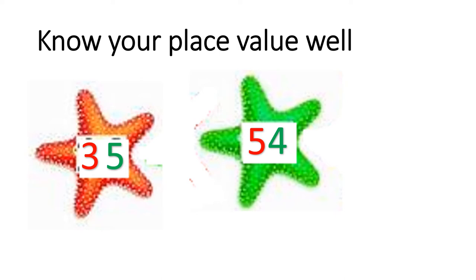Now look at the red star — the number is 35. How about the green star? It's 54. Now let's look at the place value for the red star: 3 is tens, 5 is in the place value 1. For the green star: 5 is tens, and 4 is in the place value 1.